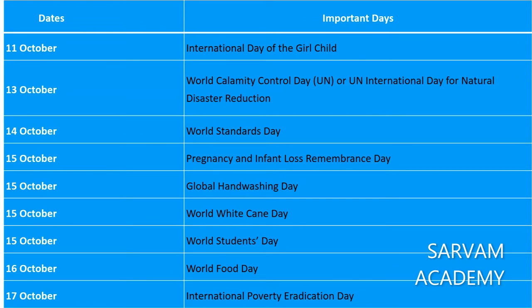October 11 is the International Day of the Girl Child. October 13 is World Calamity Control Day, or International Day for Natural Disaster Reduction. October 14 is World Standard Day. October 15 includes Pregnancy and Infant Loss Remembrance Day, Global Hand Washing Day, World White Cane Day, and World Students Day. October 16 is World Food Day. October 17 is International Day for Poverty Eradication.